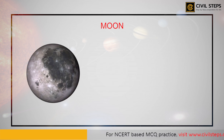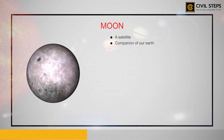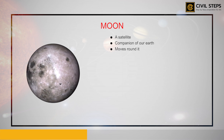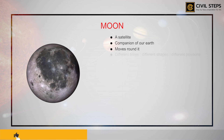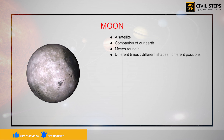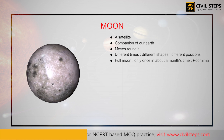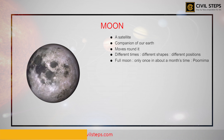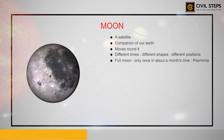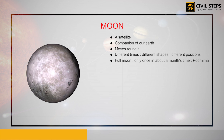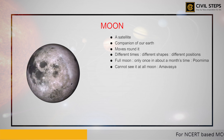The Moon that we see in the sky is actually a satellite. It is a companion of our Earth and it moves around the Earth. We may see the Moon on most days, but it appears at different times, in different shapes, and at different positions. We can see the full Moon only once in about a month's time — it is called the full Moon night, or Purnima. A fortnight, which is a period of 15 days, later, you cannot see it at all. That night is called the new Moon night, or Amavasya, and it is the best time to watch the night sky clearly.